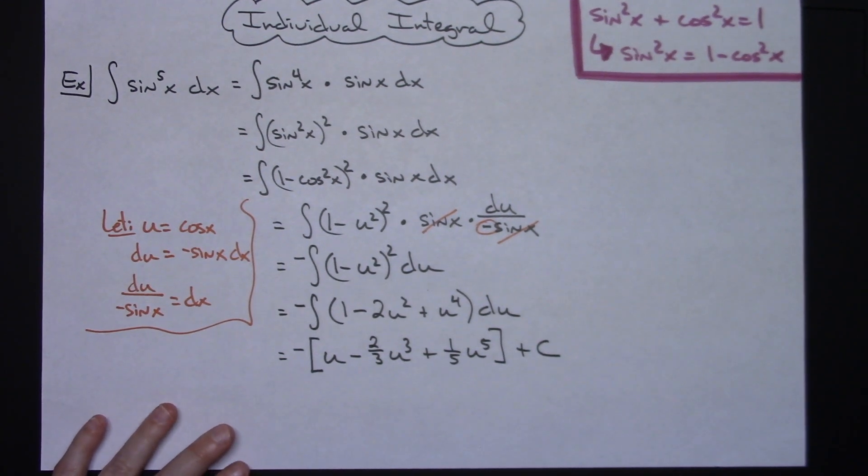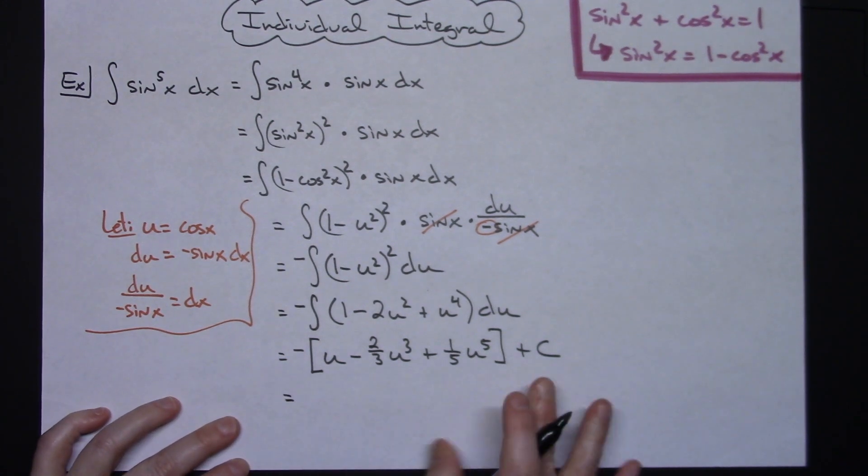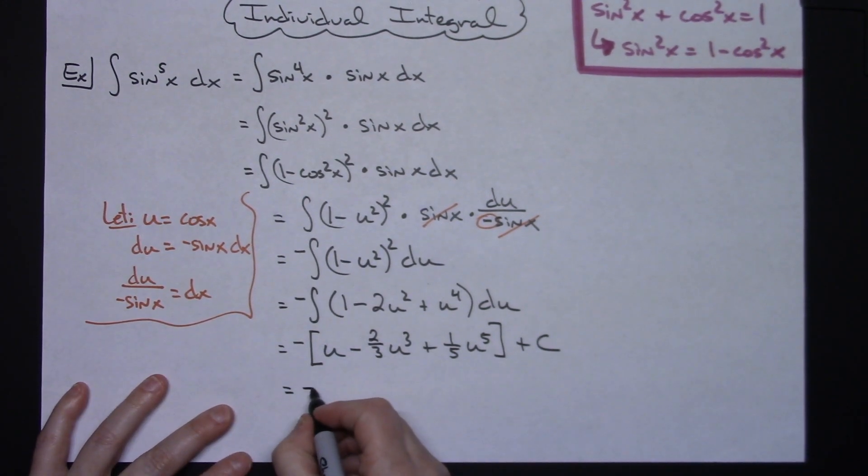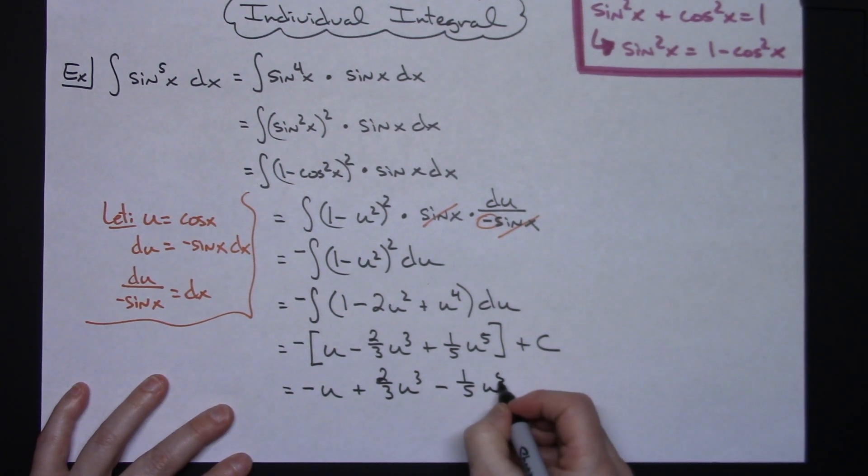At this point we're going to go through and change all the signs because we need to get rid of that negative. So we'll have negative u. That'll become plus 2 thirds u to the third. That'll be minus 1 fifth u to the fifth.